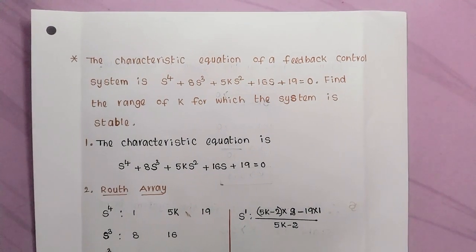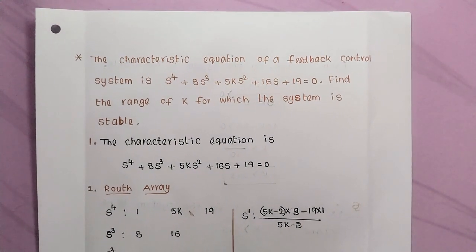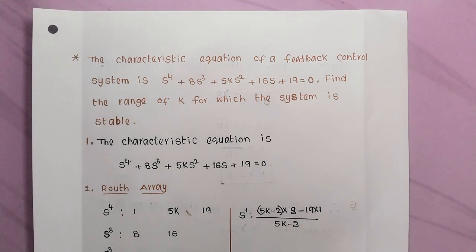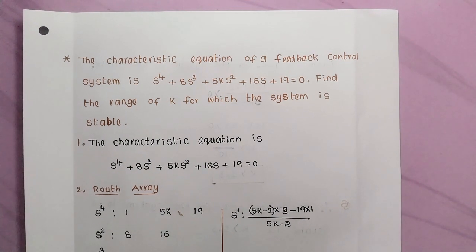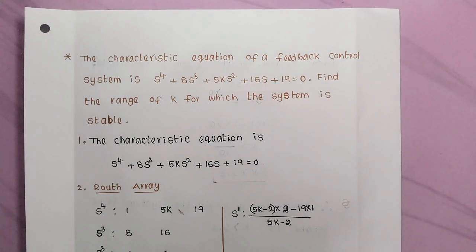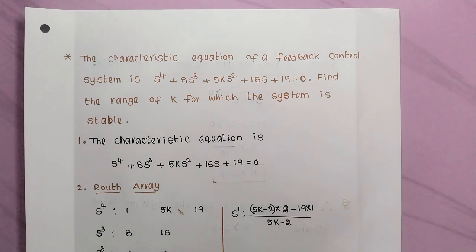In this video, I am going to discuss a problem on the Routh-Hurwitz criteria. The characteristic equation of a feedback control system is s⁴ + 8s³ + 5ks² + 16s + 19 = 0. We need to find the range of k for which the system is stable.